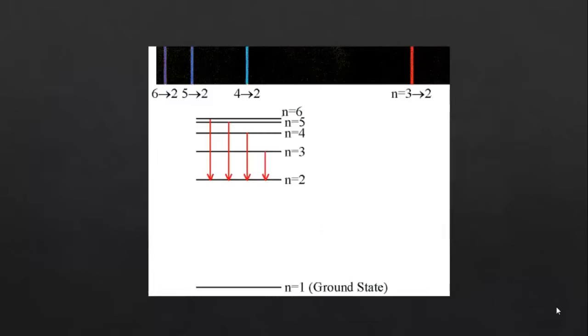As you can see, there is a limited number of energy level transitions that are possible for each atom. This means that only certain energies of photon can be released, and since the energy of a photon is related to its frequency and colour, this means we get our distinctive pattern of coloured lines.